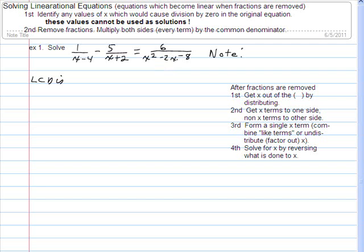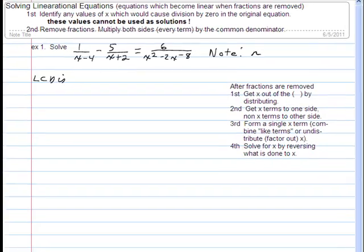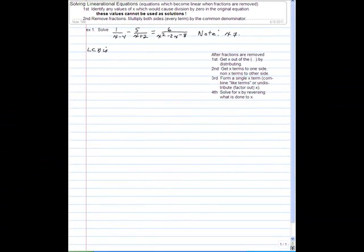Any time you come across an equation with fractions, there's two steps you need to go through. First, you need to identify any values of x which would cause division by zero in the problem. So look at the first fraction. If x was four, the bottom would be four minus four. That's zero, so I'd be dividing by zero. So I say, note, x cannot be four.